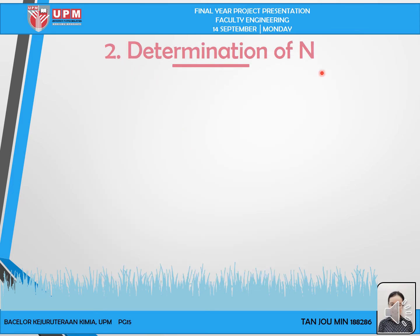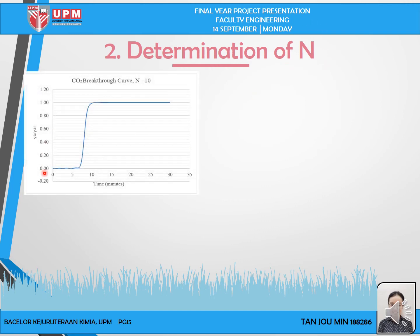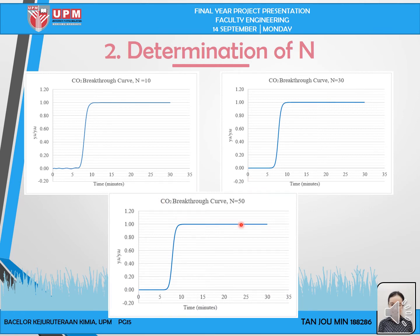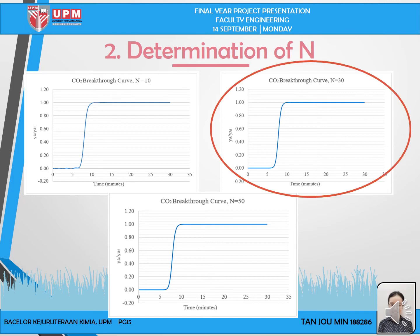Next, I determined the collocation point n. With n equal to 10, the actual dispersion effect for carbon dioxide absorption was not very accurate. I then tried n equal to 30, and the actual dispersion effect was quite smooth and accurate. I also tried n equal to 50, and the carbon dioxide adsorption showed no difference compared to n equal to 30. Therefore, the collocation point n equal to 30 is chosen for further simulation.